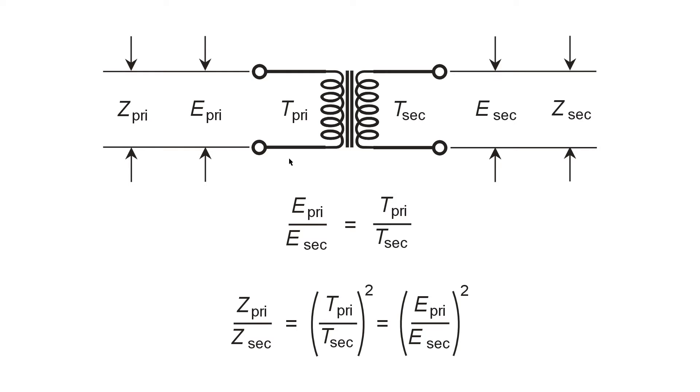So if you wanted to transform 120 volts at the primary to only 12 volts at the secondary, your primary to secondary turns ratio would be 10 to 1. 120 divided by 12 equals 10 to 1.